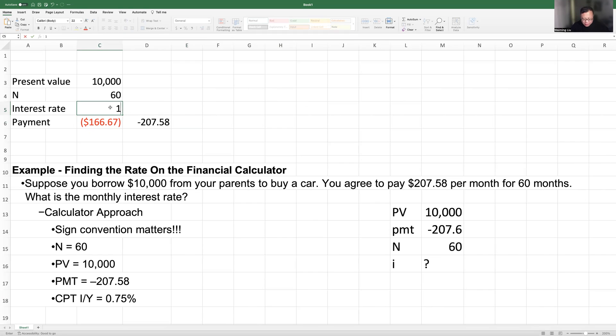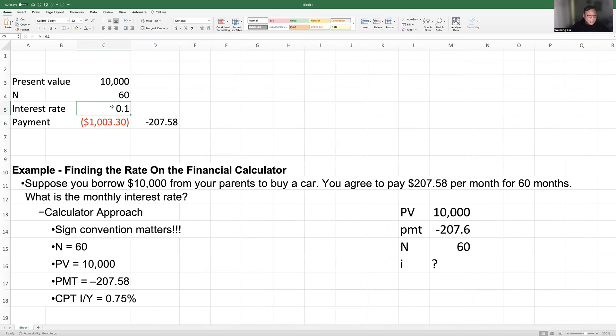Let's make this 0.01. Oh, that's too big. That's too big. It's much bigger than the 207. So you have to reduce this number. 0.05. Still too big. So 0.001.